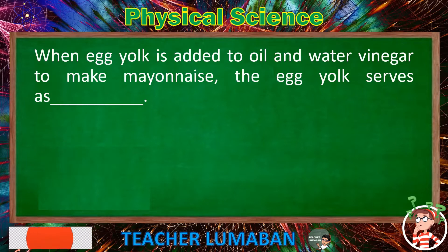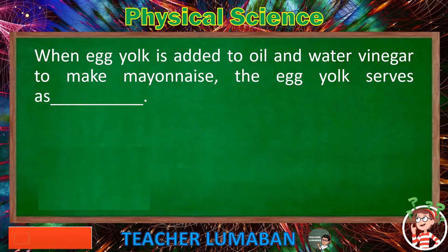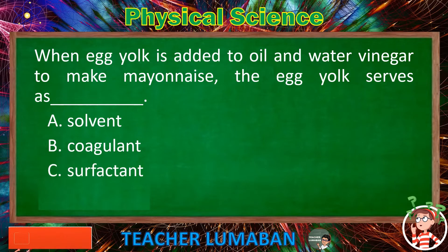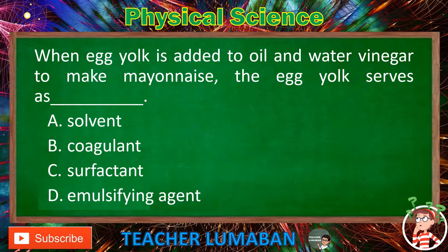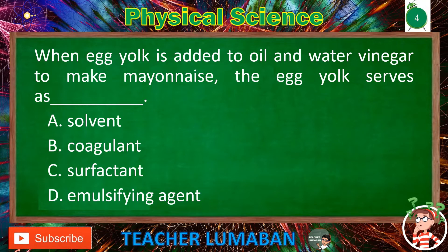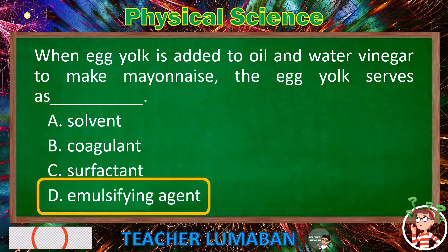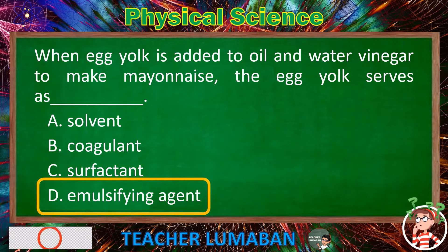When egg yolk is added to oil and water vinegar to make mayonnaise, the egg yolk serves as blank. Letter A: solvent. Letter B: coagulant. Letter C: surfactant. Letter D: emulsifying agent. The correct answer is Letter D, emulsifying agent. When egg yolk is added to oil and water vinegar to make mayonnaise, the egg yolk serves as an emulsifying agent.